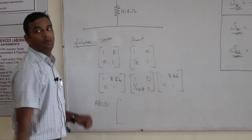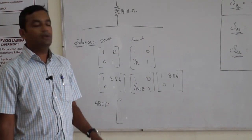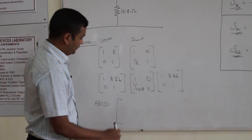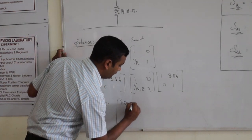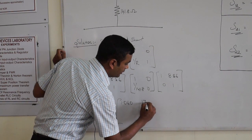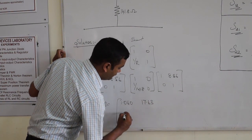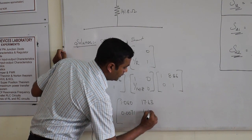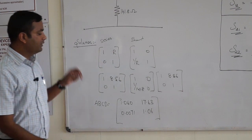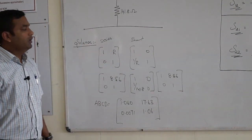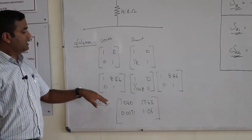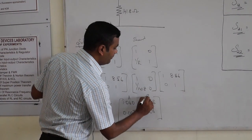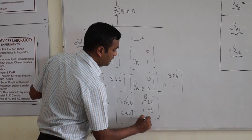Multiplying these matrices, the resulting ABCD matrix of the whole network is: A = 1.060, B = 17.63, C = 0.0071, D = 1.06. This is the ABCD matrix of this network. The next step is to convert this ABCD matrix into the S-matrix, where this entry is A, this is B, this is C, and this is D.